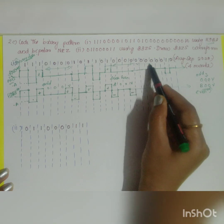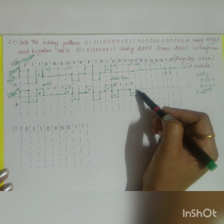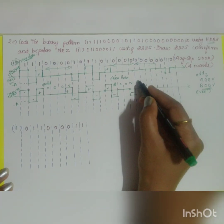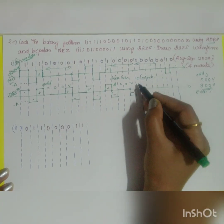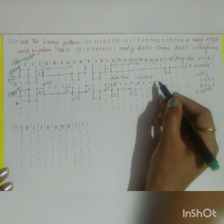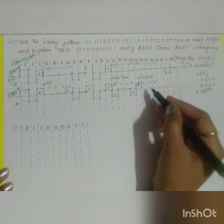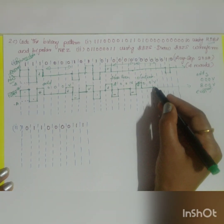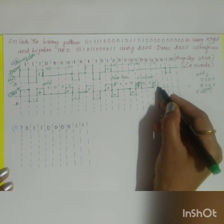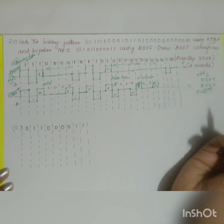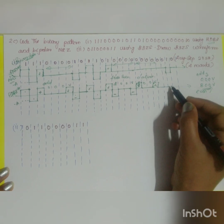Now you again have four consecutive zeros. After the violation, count the number of ones — you have zero ones, and zero is taken as even. So again replace by B00V. B here will be positive, then 0, 0, and violation is also positive, violating the rule. Next zeros remain at 0.